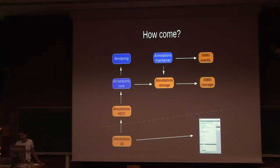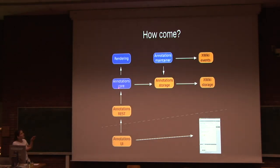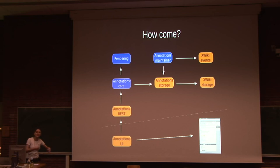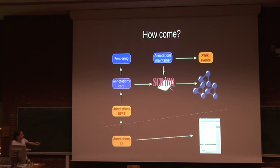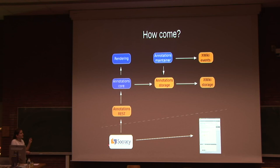How is all this possible? It's because of the modular structure of XWiki. There's the annotation core that uses the rendering module for annotation rendering, the maintainer that detects when a document updates and automatically readjusts annotations to still make sense, and the annotation storage. By default storage is implemented using XWiki objects, but for Scribo we could very easily change this module to fetch data from an RDF store. Everything else remained unchanged and it still works on top of XWiki. There's also a REST interface that provides data to the annotations UI, which is very flexible due to the JSX and SX extensions. For Socracy, we just adjusted this part — everything remained unchanged and it still works properly.